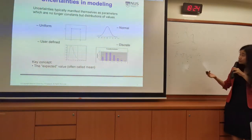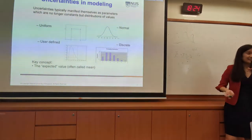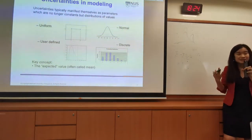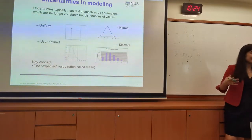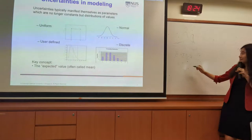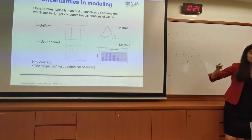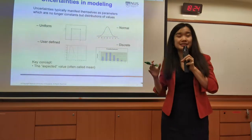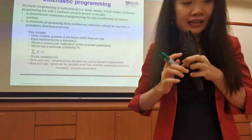A key concept here is the expected value — also called the mean value from the distribution. The expected value is calculated as each value multiplied by its probability. If discrete, use summation; if continuous, use integration. This expected value will be a very important number used in your stochastic programming formulation.